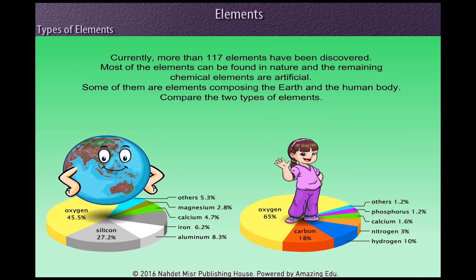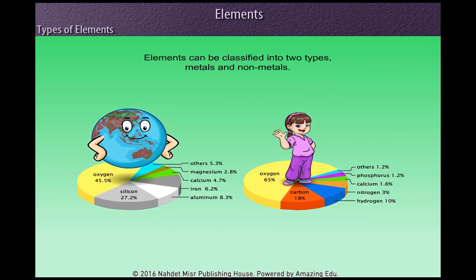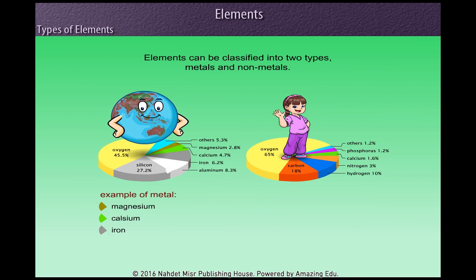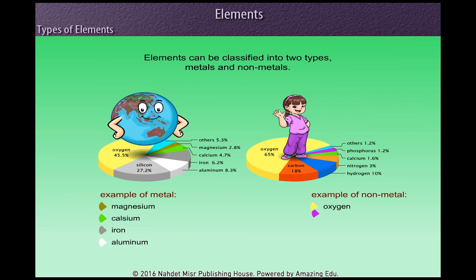Compare the two types of elements. Elements can be classified into two types, metals and non-metals.